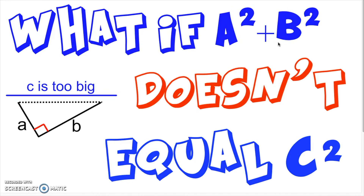Hey everyone, I'm Mr. Ray, and today I want to talk with you about what happens when a squared plus b squared doesn't equal c squared. Now I know you're probably thinking, wait a minute, I've been told that a squared plus b squared equals c squared since I was in seventh grade. That's definitely true — that's the Pythagorean theorem.